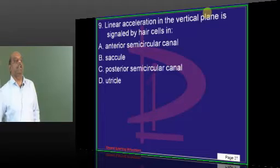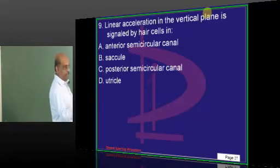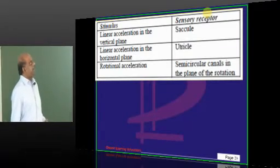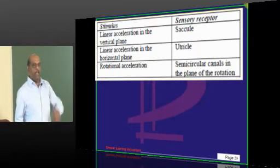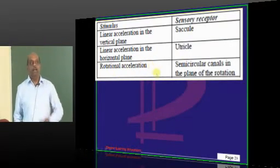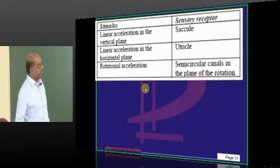Linear, angular, you need to be quite sure. What is your answer, doctor? Saccule is what need to be remembered. Linear acceleration in vertical plane is saccule. In the horizontal plane is utricle. And rotational acceleration is the semicircular canals.